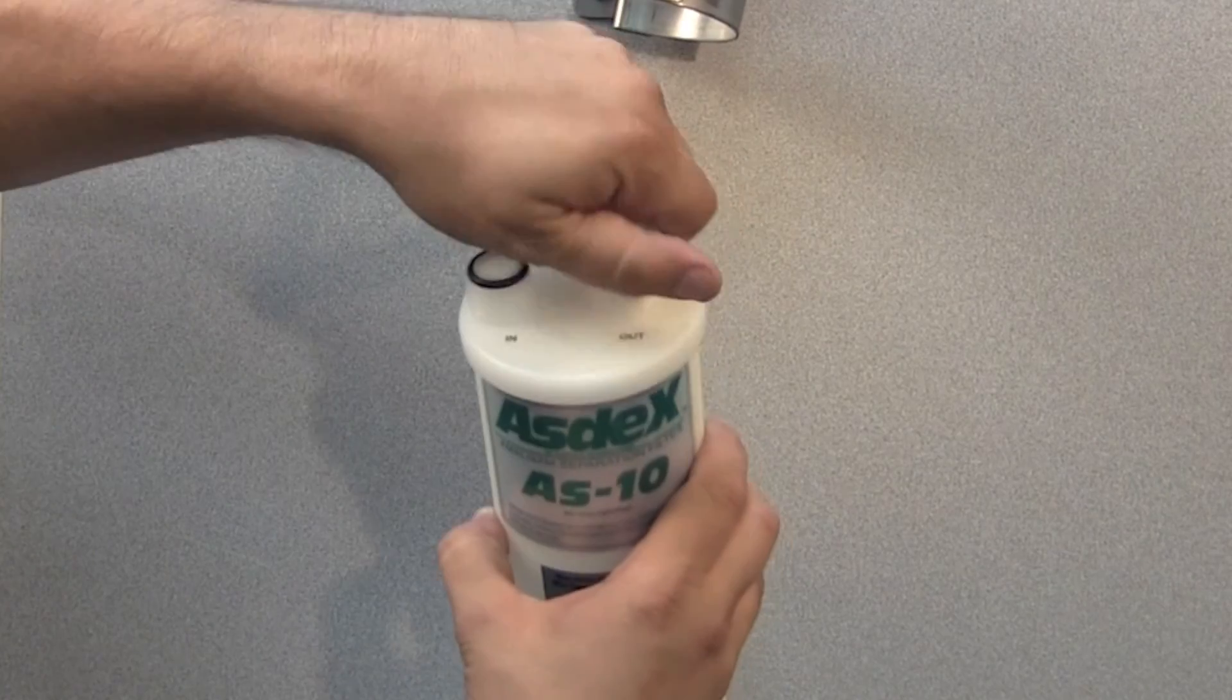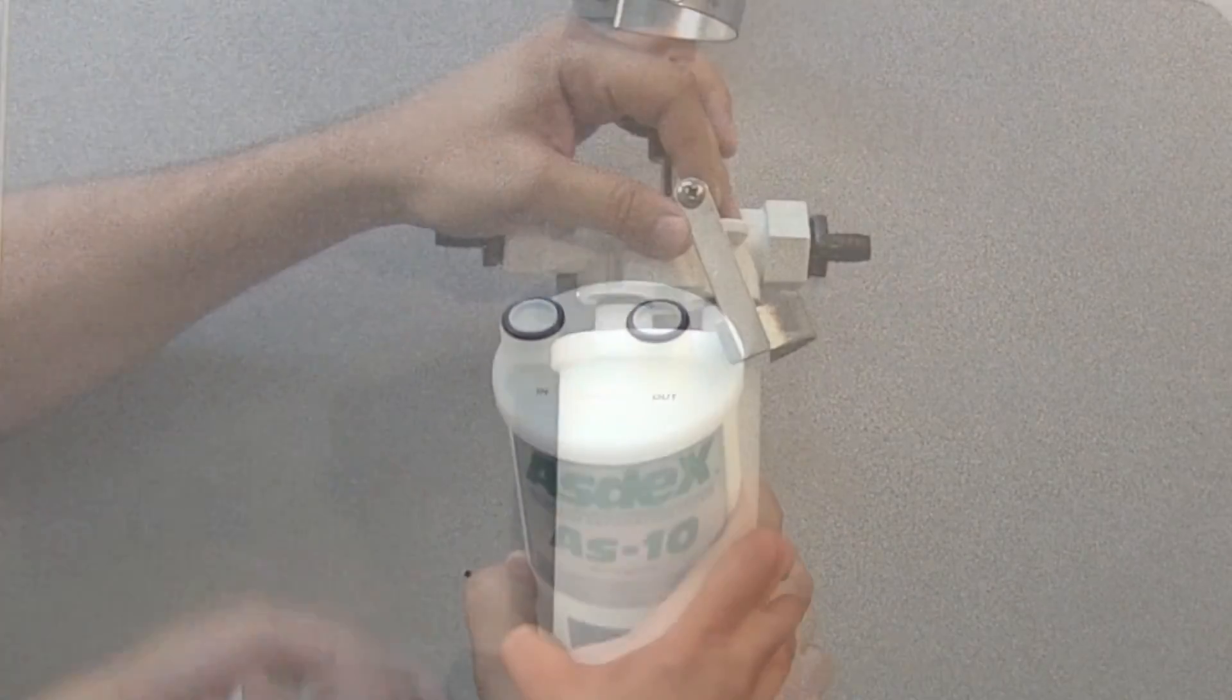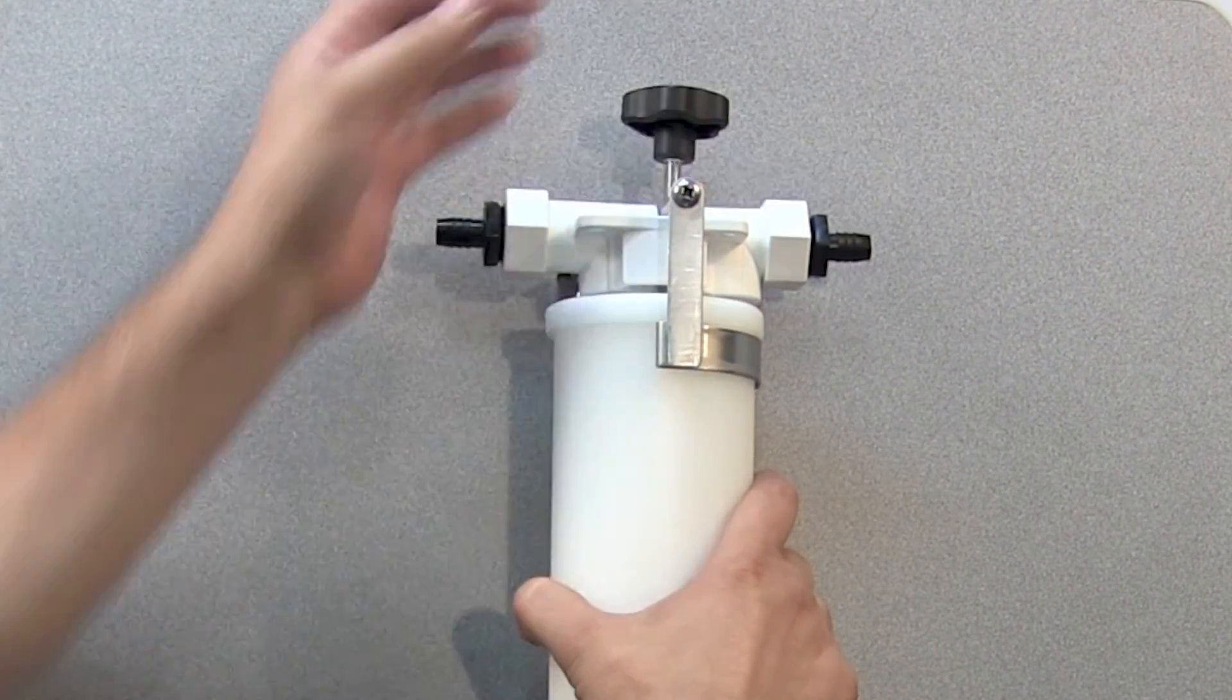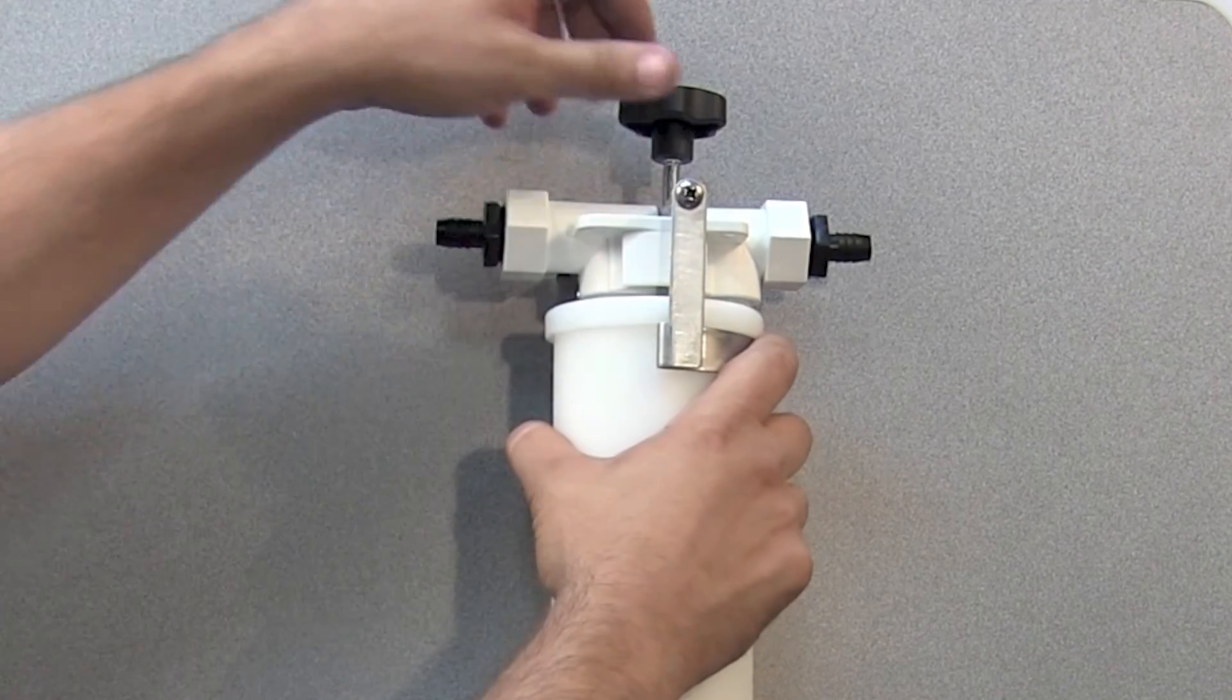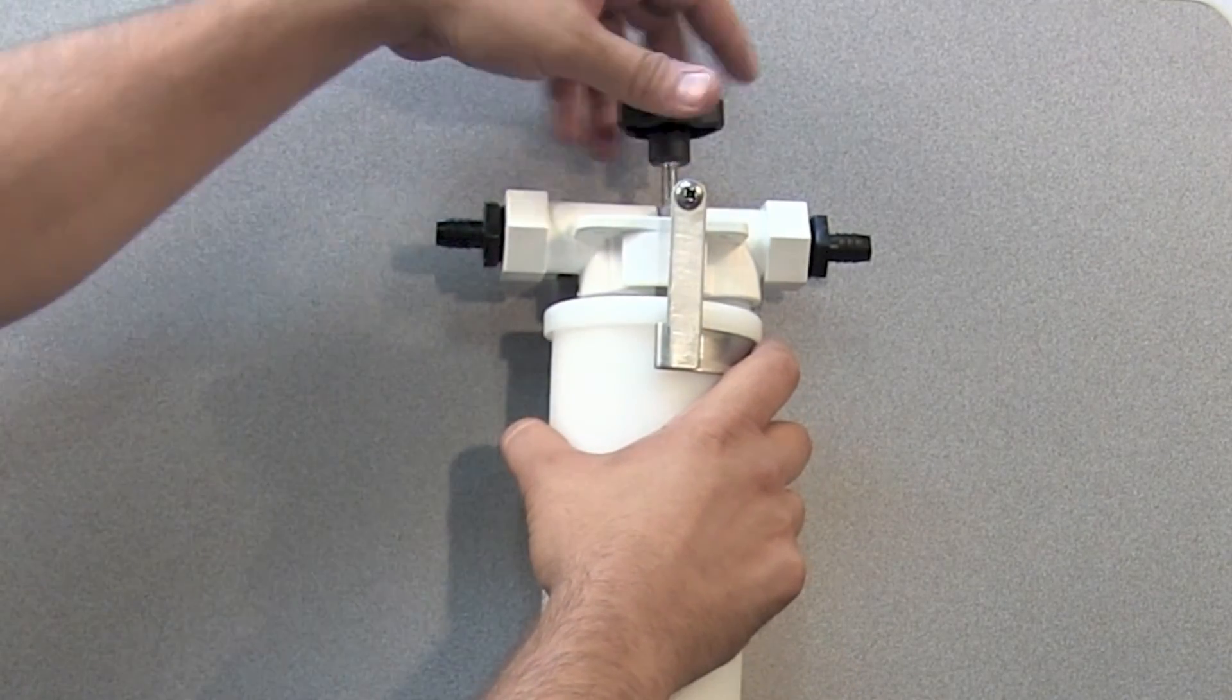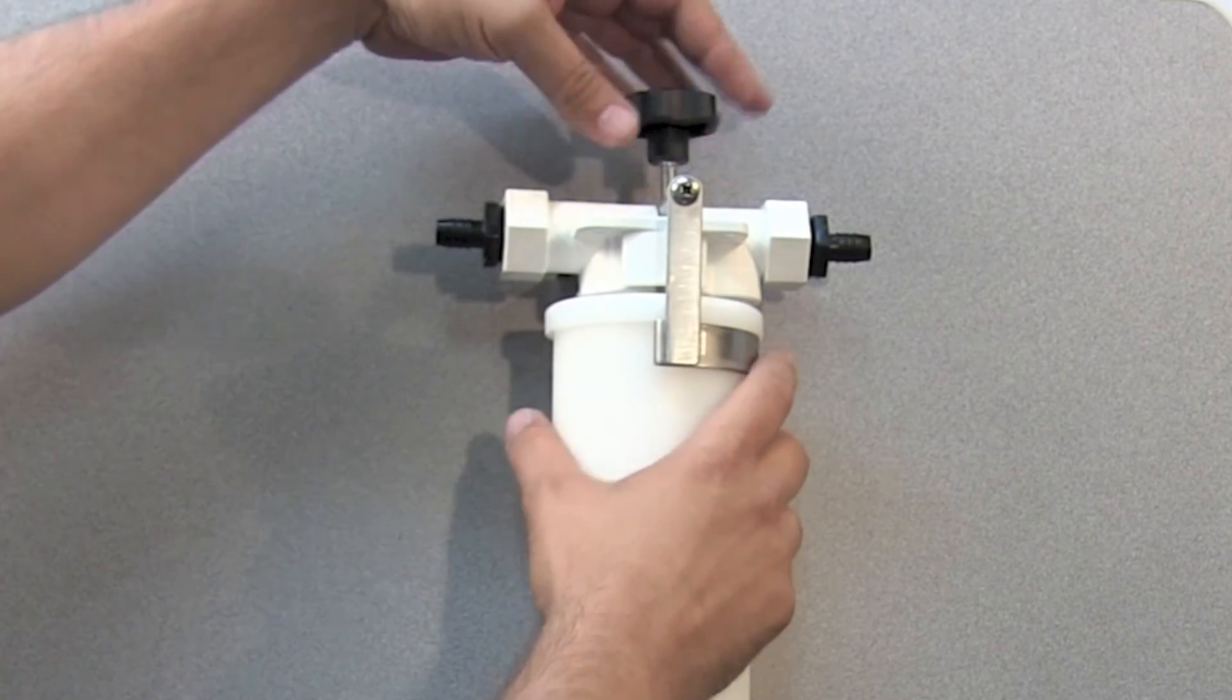Align up the inlet and outlet ports on the collection separation filter to the inlet and outlet ports on the manifold and push the filter into place. Turn the retaining knob clockwise to seat the filter snugly.